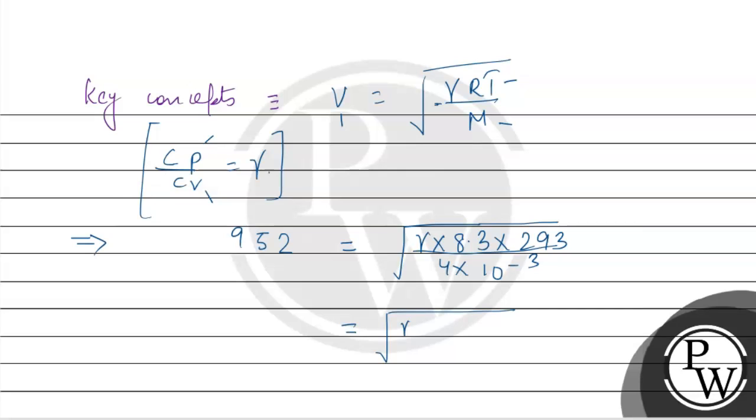952 equals square root of gamma into 8.3 divided by 4 into 293 into 1000. This equals square root of 100 by 4. If we remove root from one side, this will come 100 by 4, which is equal to 100 by 4.